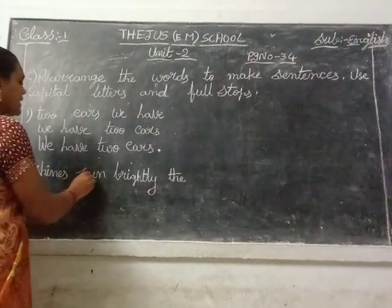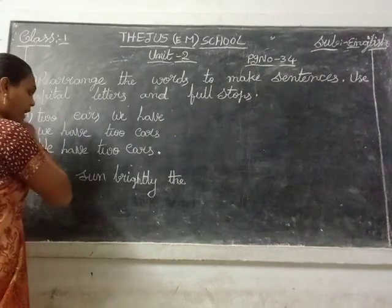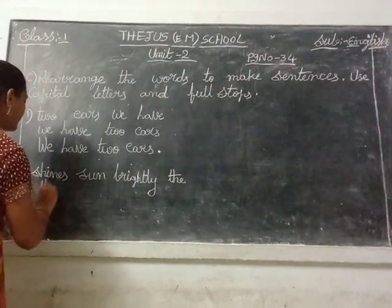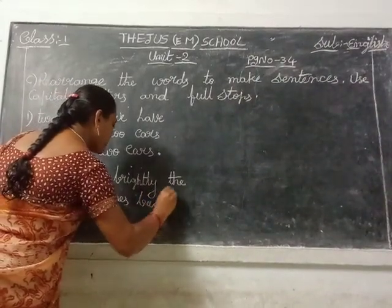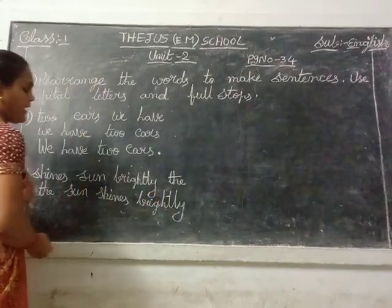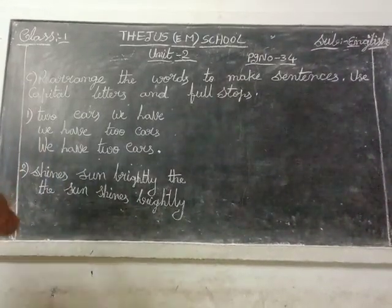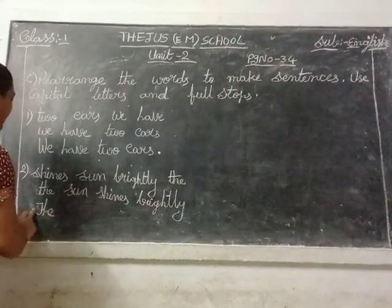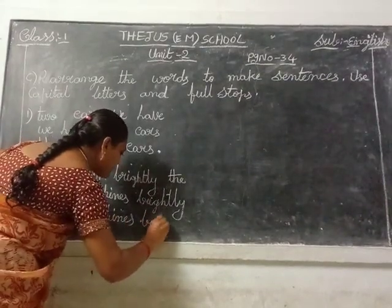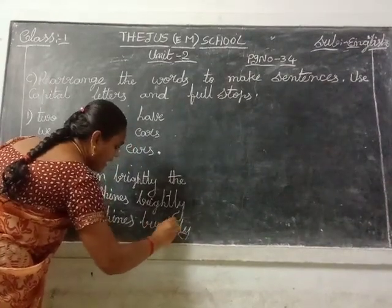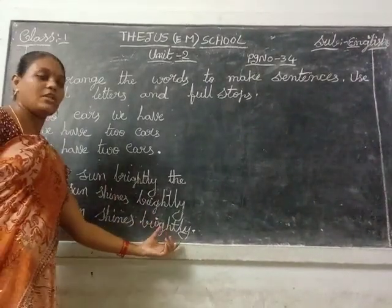Next, second one. See: 'Shines. Sun. Brightly. The.' Any meaning in that sentence, children? No. So we will write that the correct way: the sun shines brightly. Now we will put the capital letter and full stop. The sentence starts with capital letter — capital T — and sun: the sun shines brightly. B-R-I-G-H-T-L-Y. And we will put the full stop here because this is a completed sentence.